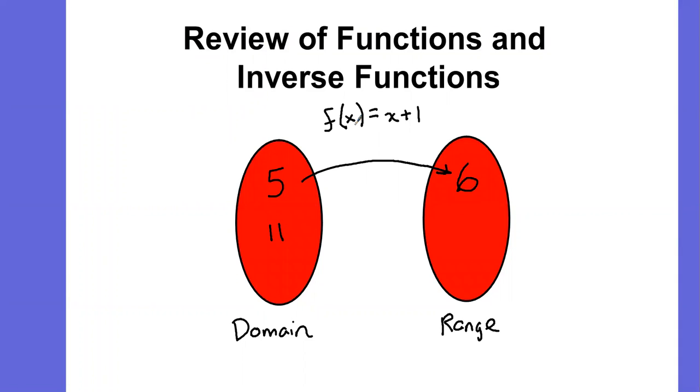If I do f of 11, that's 11 plus 1, which is 12. And we'll do one more. If I do f of negative 4, negative 4 plus 1 would be negative 3.